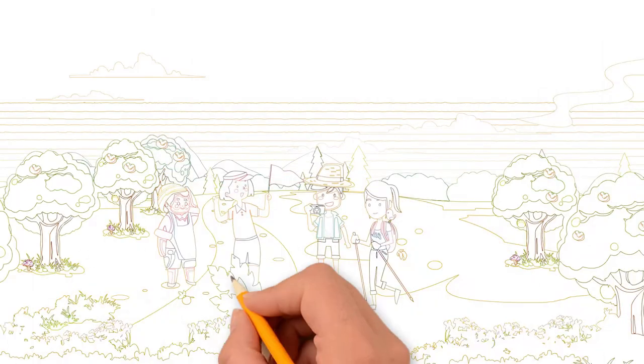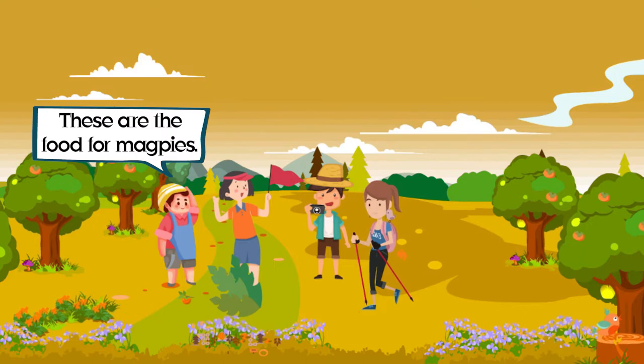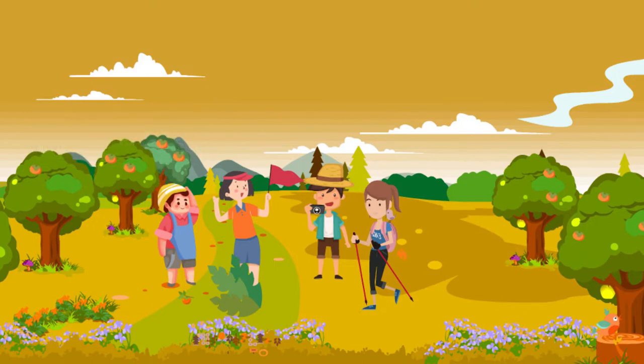Tourists would usually be curious about the ripe persimmons on trees. These are the food for magpies. Farmers always answer like that.